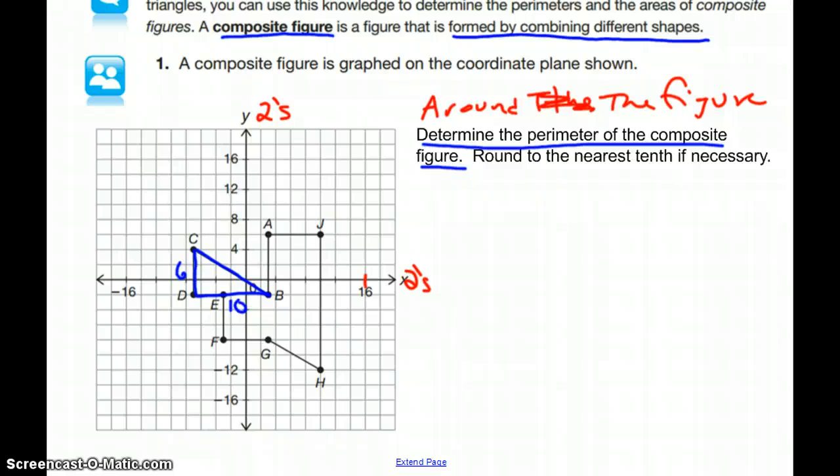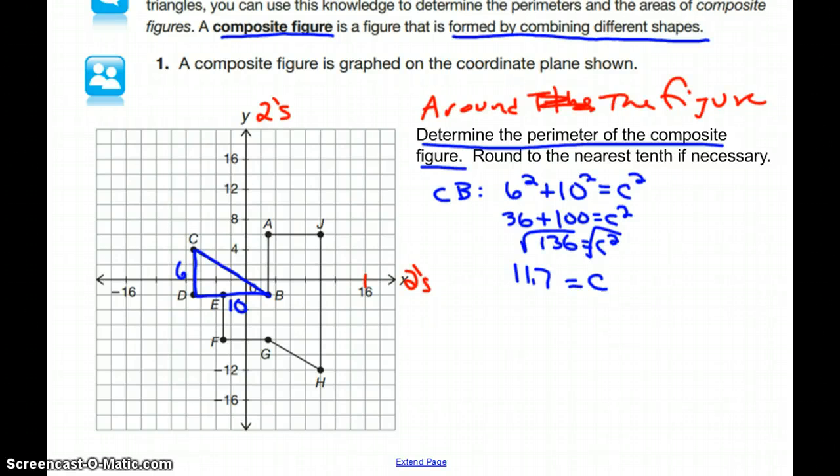So to find the length of CB using the Pythagorean theorem, I would have 6 squared plus 10 squared equals C squared. That gives me 36 plus 100, and adding those together is 136. Then taking the square root of 136, rounding to the nearest tenth, we see that that length turns out to be 11.7. So the length of CB on our diagram is 11.7.